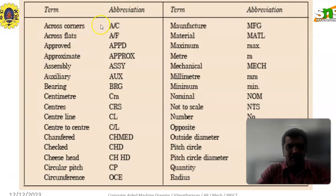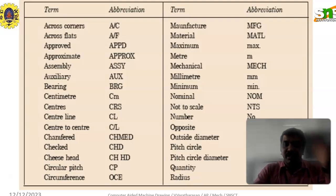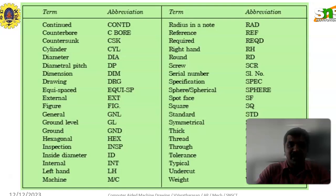Likewise, circular pitch, circumference, manufacture, material, maximum, meter, mechanical, and millimeter. Minimum, nominal, not to scale, number, and opposite. Outside diameter, pitch circle, pitch circle diameter, and quantity. Radius. Counter bore and counter sunk, cylinder, diameter, diametral pitch, dimension, drawing, equispaced, external, figure, general, ground level, hexagonal, inspection, inside diameter, internal, left hand, machine, radius in node, reference, required, and right hand.